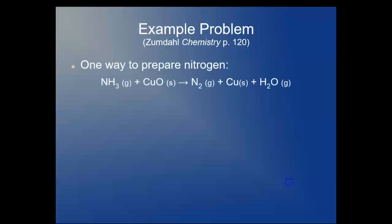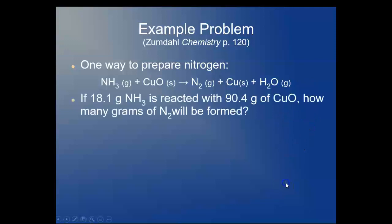Here's the sample problem. One of the things you can do to prepare nitrogen gas is to run ammonia gas over the copper oxide that you see here, and nitrogen gas comes off. This is a reduction, so the copper metal is formed, so you get that byproduct and you get water vapor coming off as well. The question is, if you react 18.1 grams of ammonia with 90.4 grams of copper oxide, how many grams of nitrogen will you get?